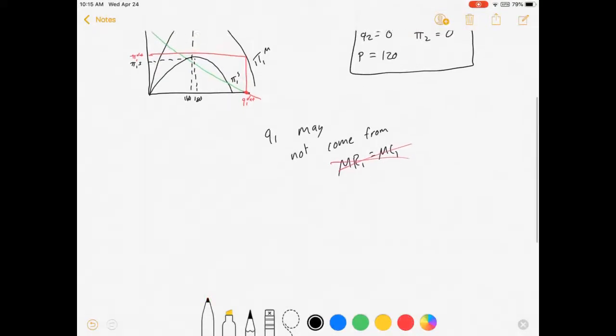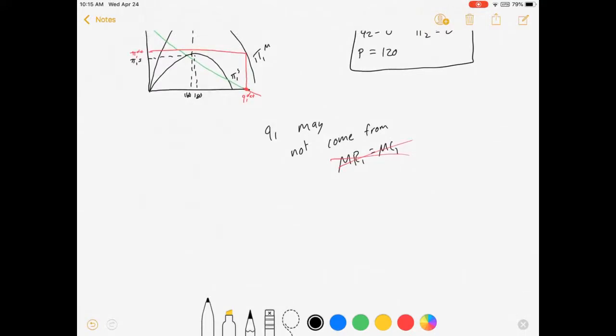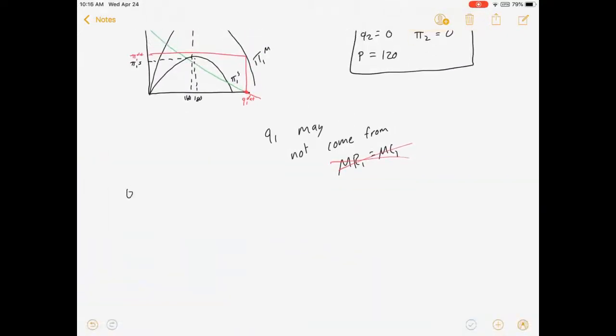This marginal revenue equals marginal cost gig is the one that's associated with the peaks of these curves, the profit maximizing points. But that red profit is not at the peak. And so the red point does not need to have this happen. So let's solve for firm 2's profit as a function of firm 1's Q, whatever that Q may be.